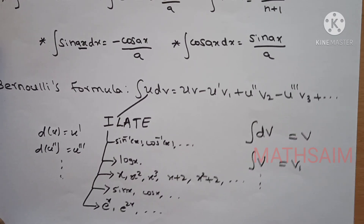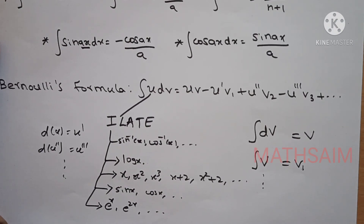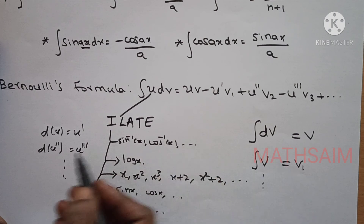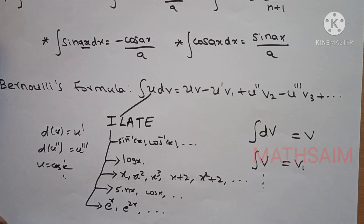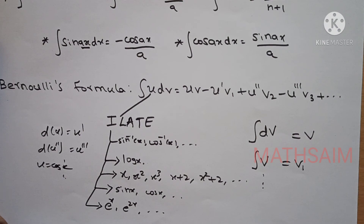If u becomes 0, you can use the Bernoulli formula. For example, integration of x squared cos x: we will select x squared as u for differentiation. U dash is sin x, u double dash is cos x, triple dash is sin x — cos x, sin x continue. But the algebraic term reaches 0 after a finite number of derivatives, so we stop. In these terms, we will use the Bernoulli formula. U must have a finite number of derivatives — that is the condition to apply the Bernoulli formula.